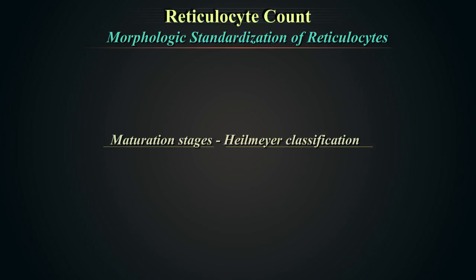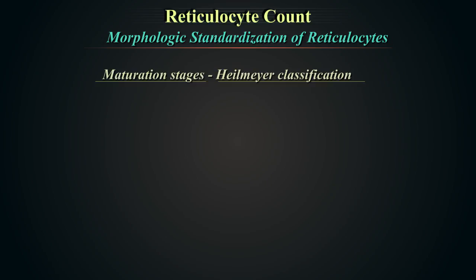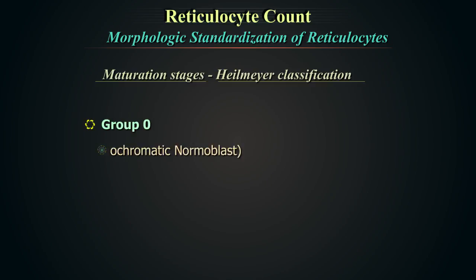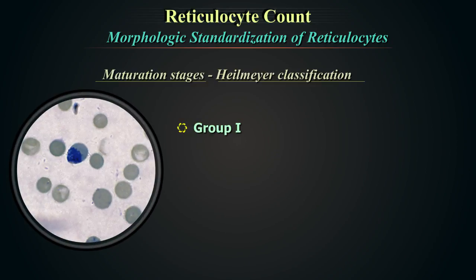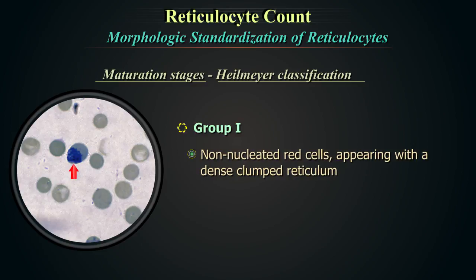Maturation stages of reticulocytes according to Heilmeier's classification are divided into various groups. Group 0 represents the nucleated erythrocyte or orthochromatic normoblast, which stains strongly for reticulin and the nucleus. This cell type is not included in the reticulocyte count. Group 1 represents non-nucleated red cells appearing with a dense clumped reticulum.